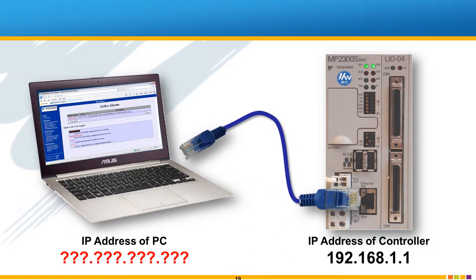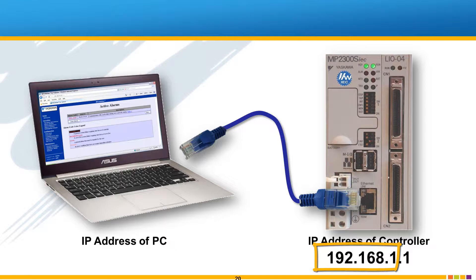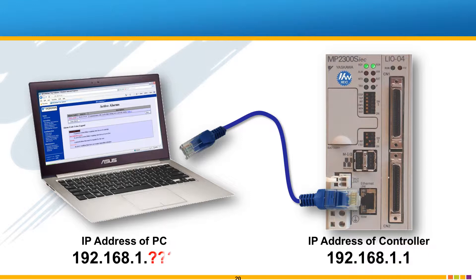The PC must have a compatible address. This means that the first three bytes of the IP address must match but the last byte is different. In this case the PC has to have an IP address of 192.168.1 ending in a number anywhere from 2 to 255.